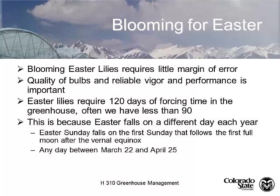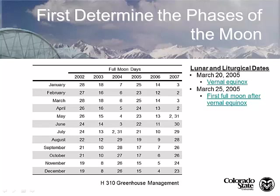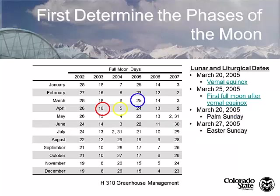Easter falls on a different day each year. In Western Christian culture, Easter Sunday always falls on the first Sunday following the first full moon after the vernal equinox—anywhere from March 22nd to April 25th. This year it was March 31st, just one week from the earliest possible date. Charts for calculating Easter dates come from the Department of the Navy, since the Navy tracks moon phases for tides.